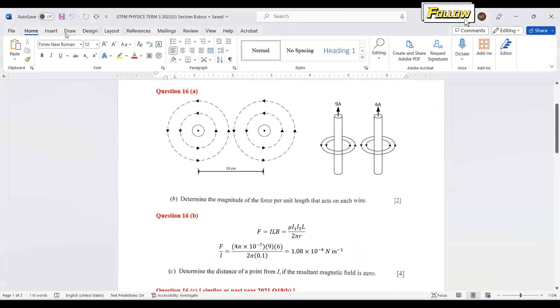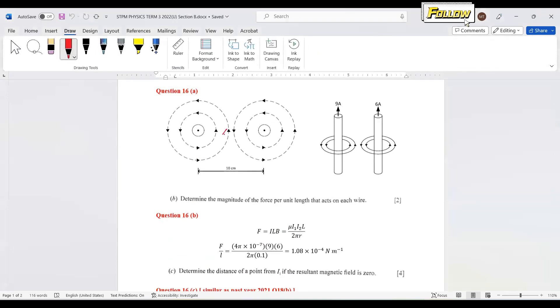We have the point here - the distance here is x centimeter, so this would be 10 minus x. This is what we need to declare to do the derivations.